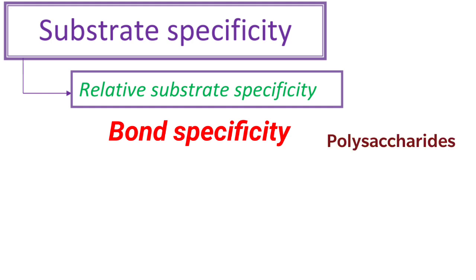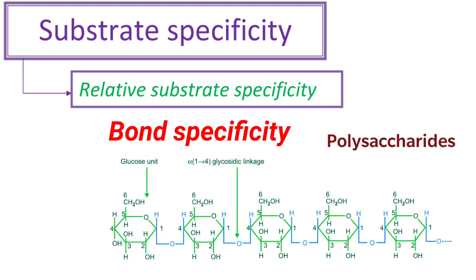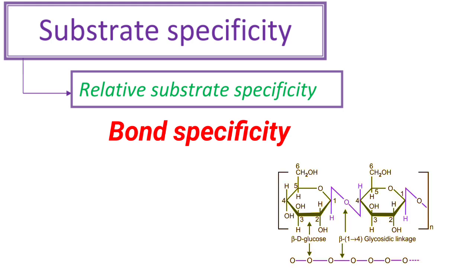Any substrate which contains alpha-1,4 glycosidic bonds can be acted upon by salivary alpha-amylase. But if the substrate has beta-1,4 glycosidic bonds, then salivary alpha-amylase cannot act on those bonds. This indicates bond specificity.